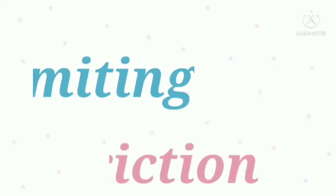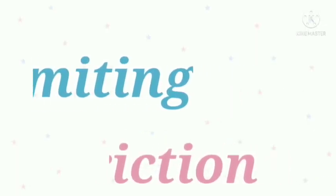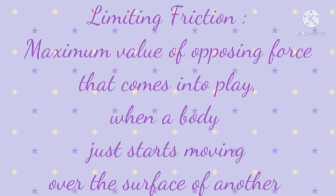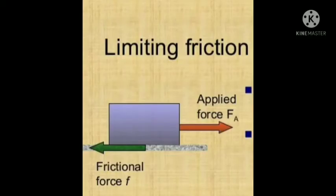Second is limiting friction. Limiting friction is the maximum value of opposing force that comes into play when a body just starts moving over the surface of another. For example, if you move a box from one place to another, the force required to overcome friction at the instant the box starts moving from rest is the measure of limiting friction. The static friction at this stage is maximum.